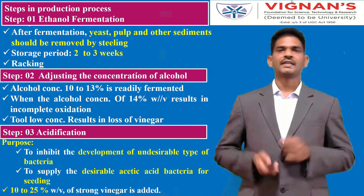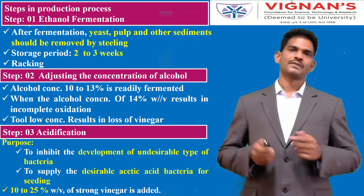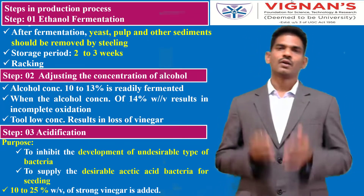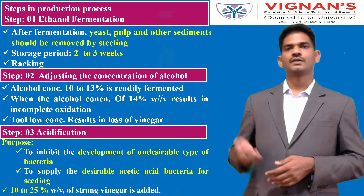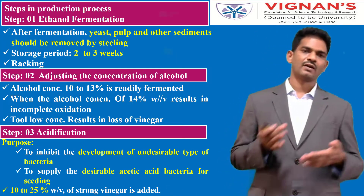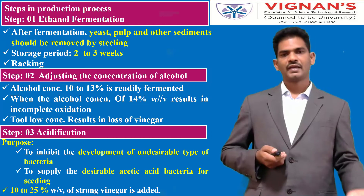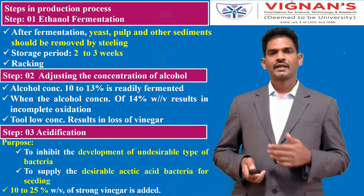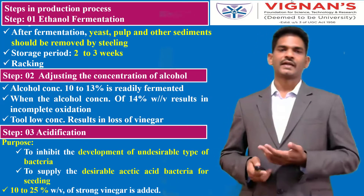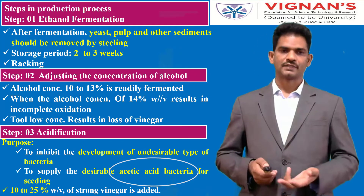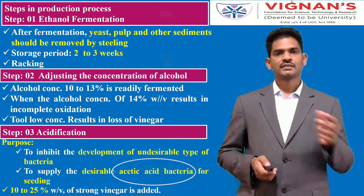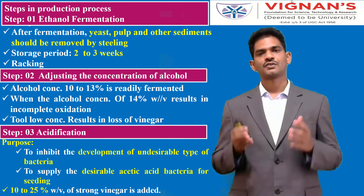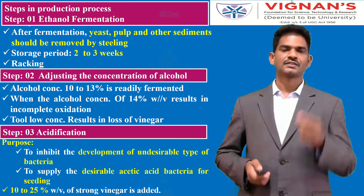Step three is acidification. The purpose of acidification is to inhibit the development of undesirable types of bacteria, as other bacteria will not grow at a very acidic pH. This step also helps desirable acetic acid bacteria to grow fast. This step requires the addition of 10 to 25 percent of strong vinegar added at the start of the process.